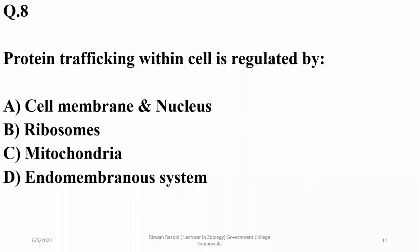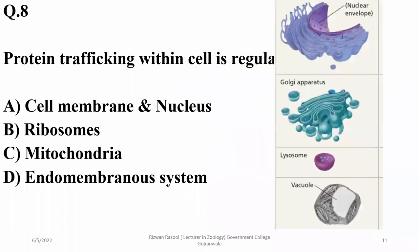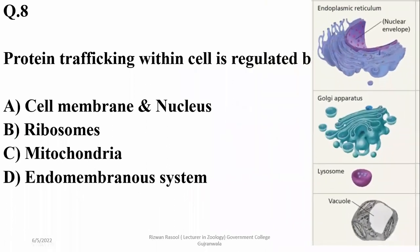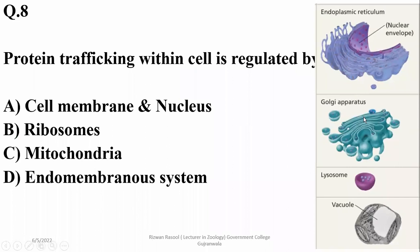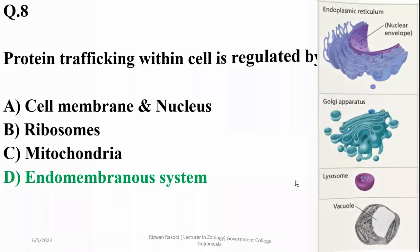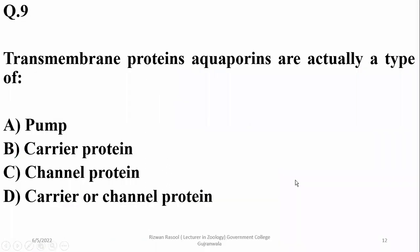The endomembrane system includes the outer nuclear membrane, rough endoplasmic reticulum (RER), Golgi apparatus, smooth endoplasmic reticulum (SER), lysosomes, and even certain types of vacuoles. Right option is D.